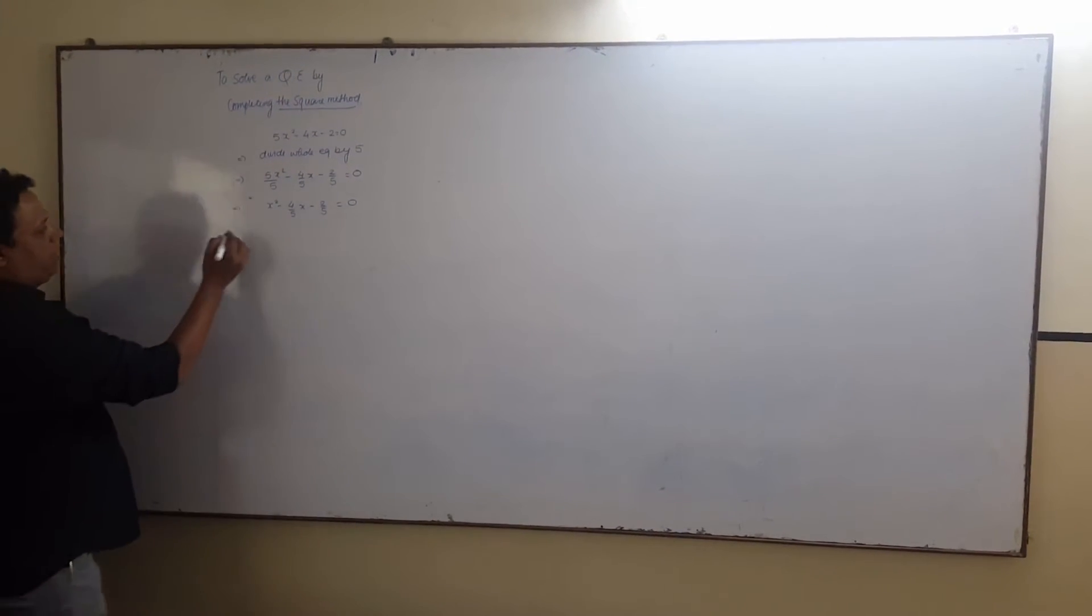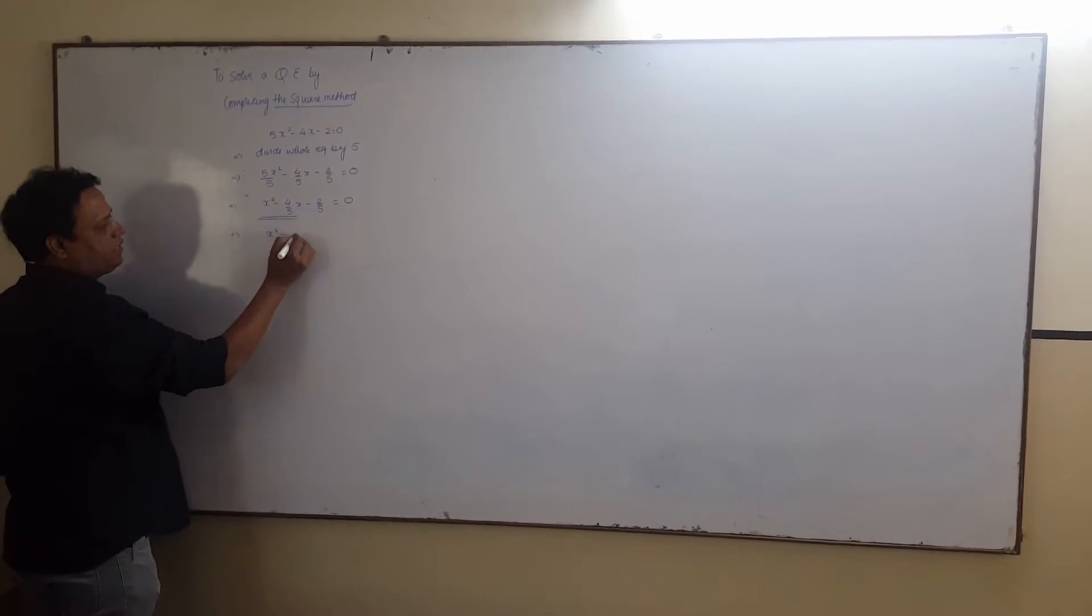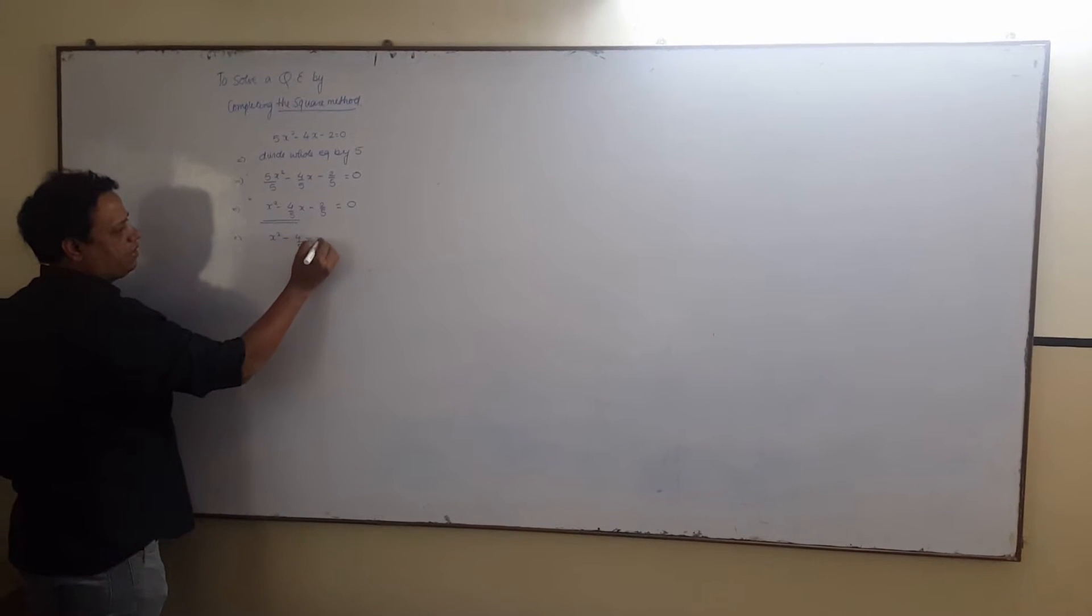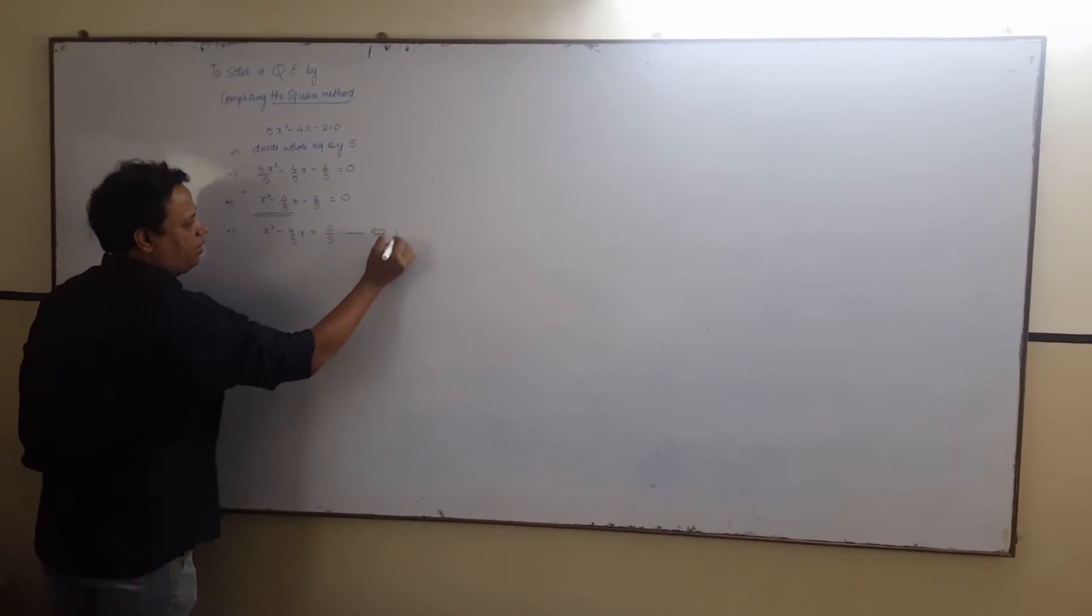Now, take x on left hand side. It will be x square minus 4 upon 5x equals to 2 upon 5. This is our equation number 1.